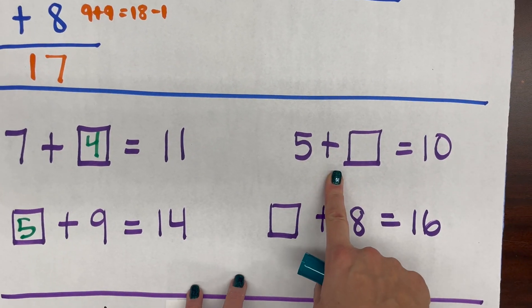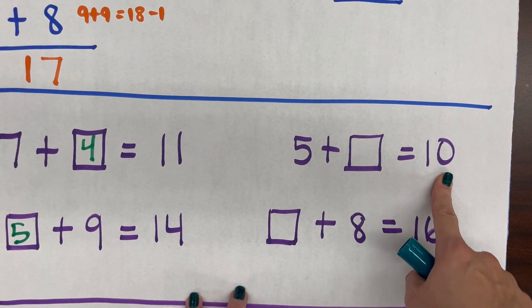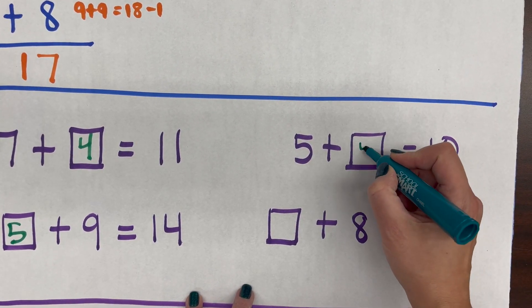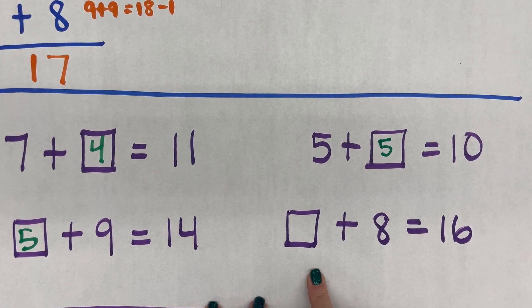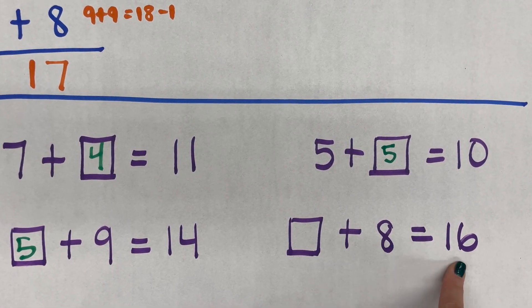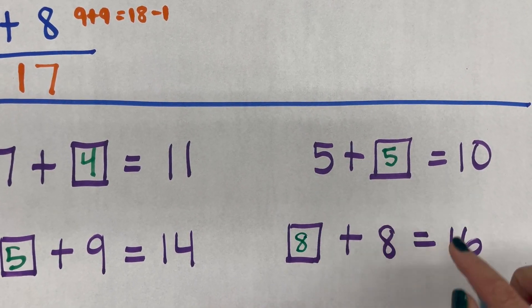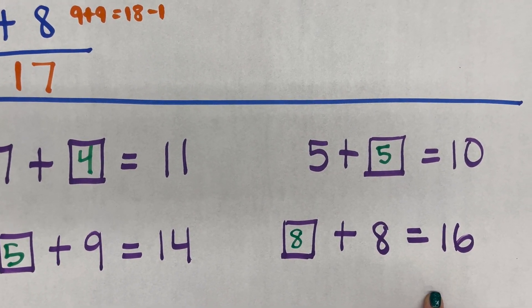Now if I come over to here, I see 5 plus what equals 10. I know that my doubles fact for 5 is 5 plus 5, so I could use a related fact here. And then same thing down here, 8 plus what equals 16. I know that 8 plus 8 equals 16, so I would consider using a related fact to solve for this.